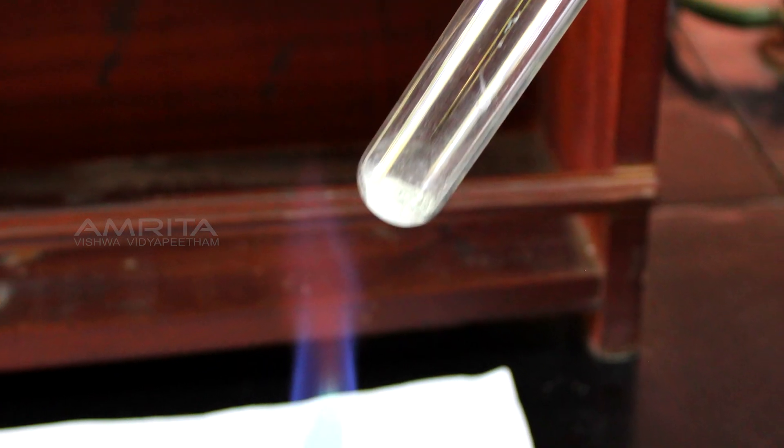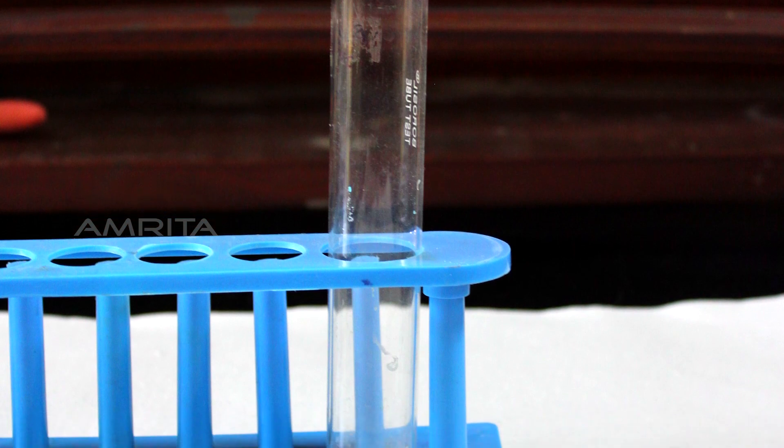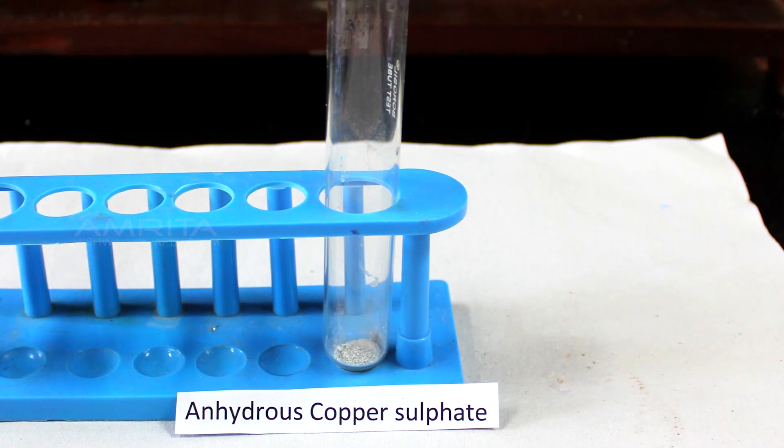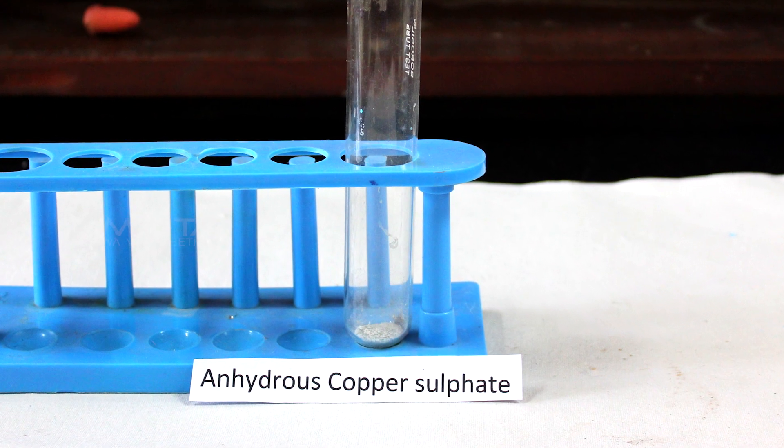Now, remove the boiling tube from the flame and cool it for some time. Label the content of the boiling tube as anhydrous copper sulphate.